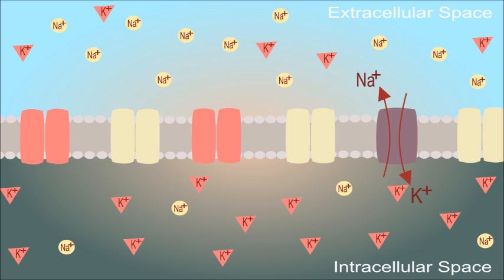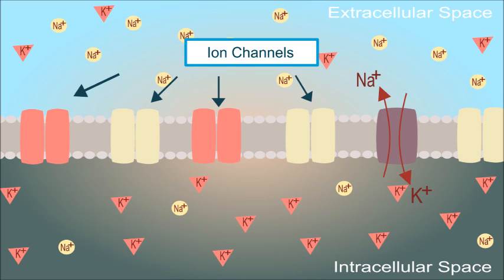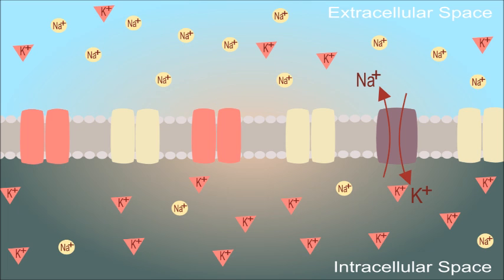On the membrane of the neuron you will find ion channels that are closed when the cell is in its resting state. The neuron is able to create an action potential because of the concentration difference of ions between the intracellular space and the extracellular space.